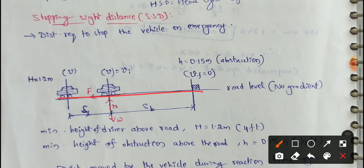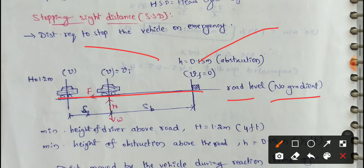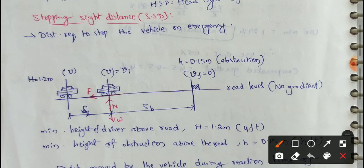This is the road level condition. Road level means no gradient — that means no slopes, only flat. So, if we choose this condition, a vehicle is moving with an initial velocity V.